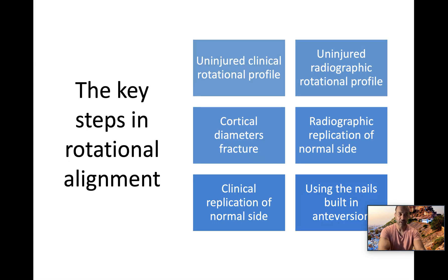Rotational alignment is key and there are both clinical and radiographic ways of making sure it is correct. Firstly, look at the uninjured leg. Look at the clinical rotational profile, i.e. how much internal rotation there is. Then look at the radiographic rotational profile, i.e. get an AP, a true AP of the knee and scroll up to the hip and look at how much lesser trochanter is visible, and replicate that on the injured side.